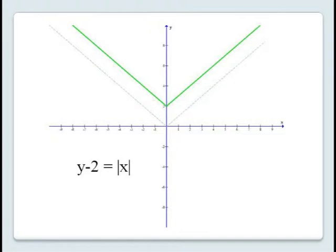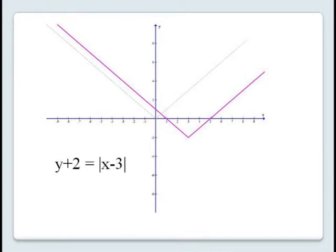For y minus 2 equals the absolute value of x, we've replaced y by y minus 2, so this results in a vertical translation 2 units in the positive y direction, as shown here in green. And finally, y plus 2 equals the absolute value of x minus 3 — we've replaced y by y plus 2 and x by x minus 3. So this results in a horizontal translation 3 units to the right and a vertical translation 2 units down. The resulting graph is shown here in purple.